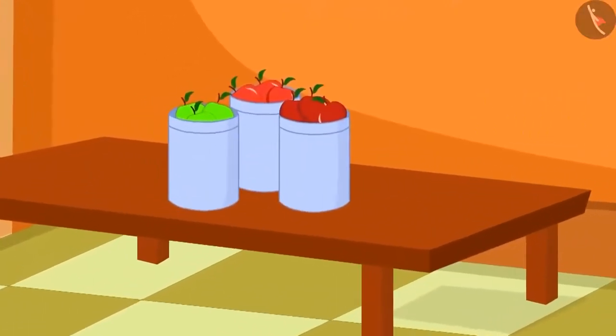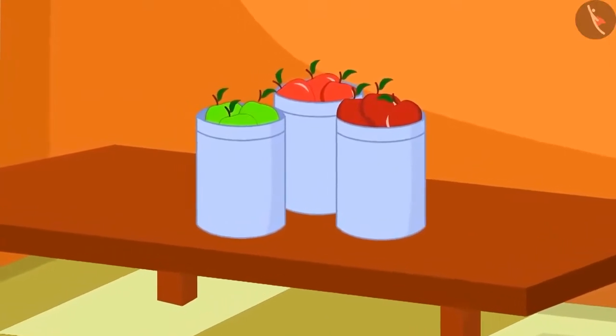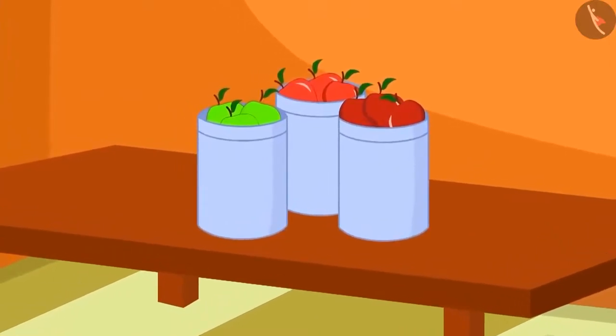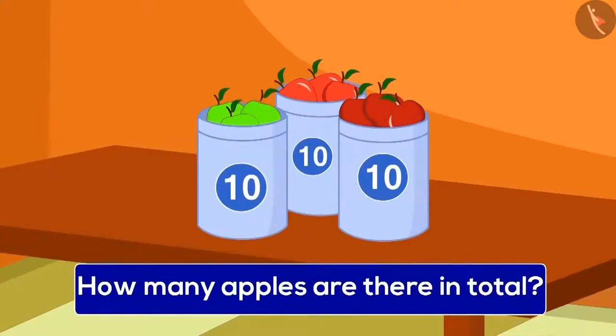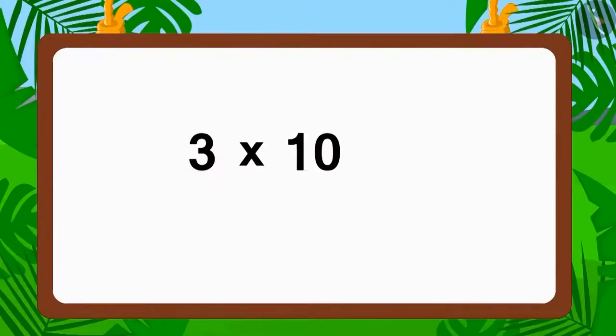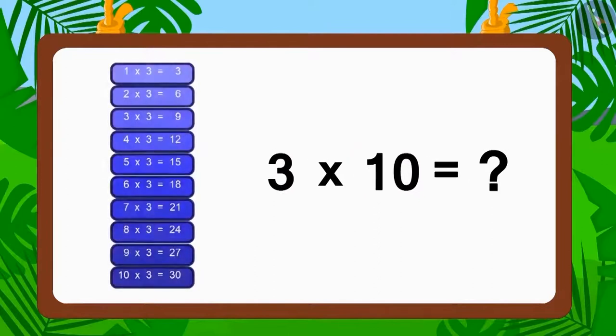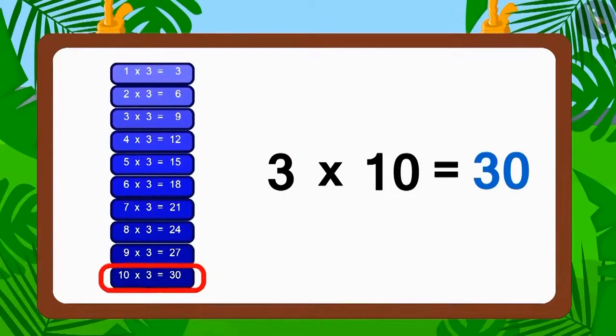As he walked in, he saw three boxes on the table and in each box, there were ten apples. Can you tell how many apples were there in total? How will we write this by using multiplication? Three multiplied by ten. Now, using the multiplication of three, how many are these? Thirty.